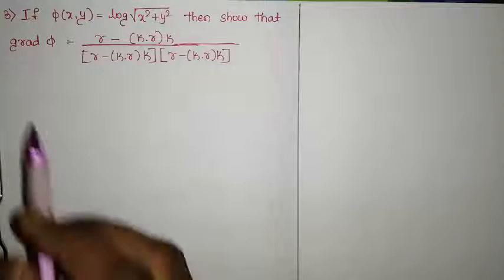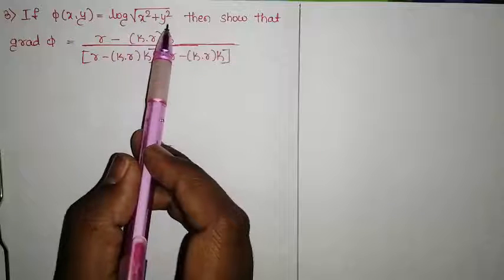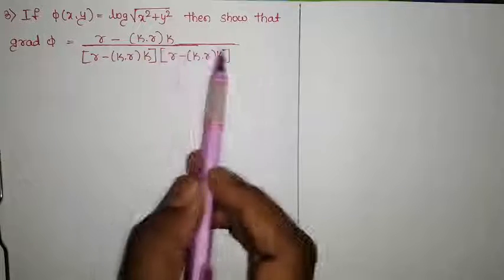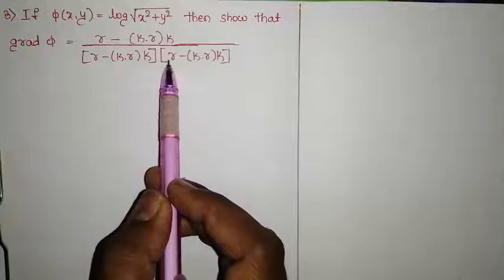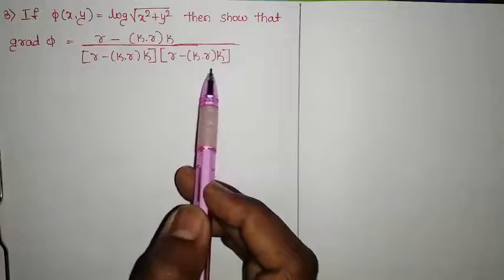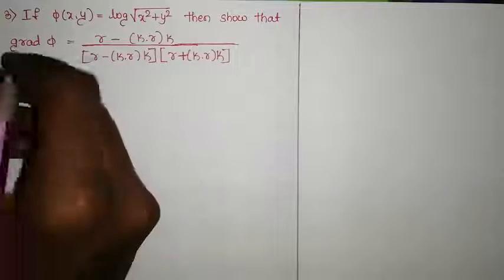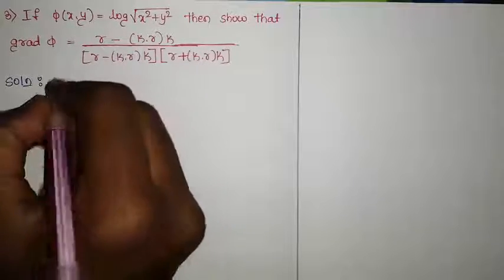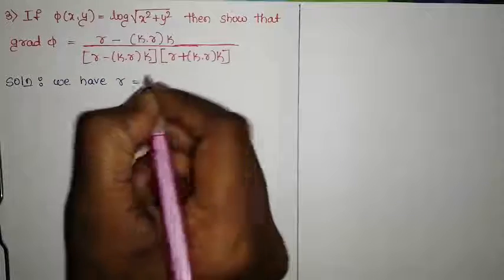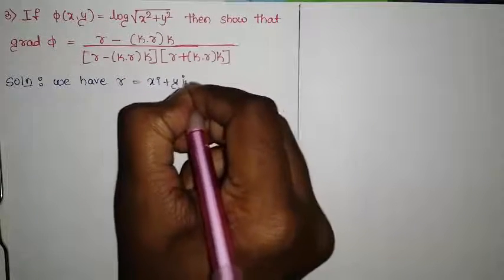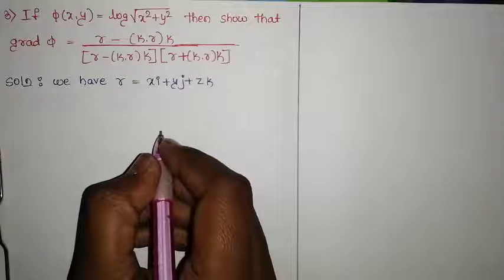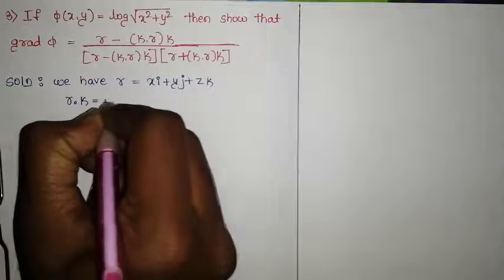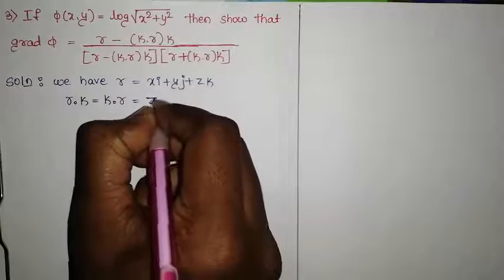Next example: if π(x, y) = log√(x² + y²), show that ∇π = (r − k(k·r)) / ((r − k(k·r)) · (r + k(k·r))). We consider r = xi + yj + zk, and note that r · k = k · r = z.